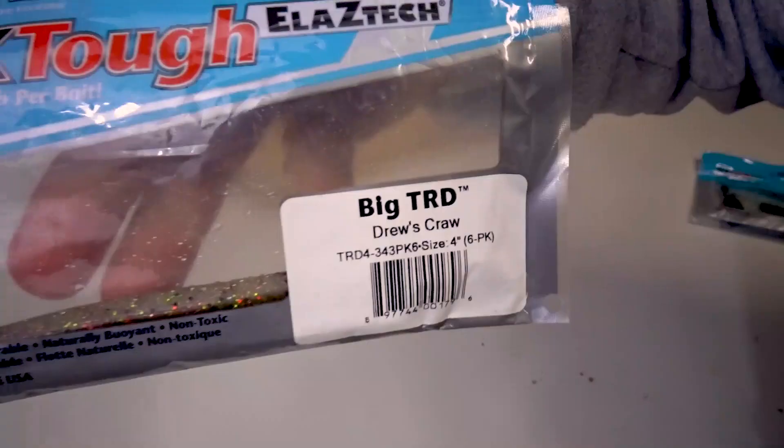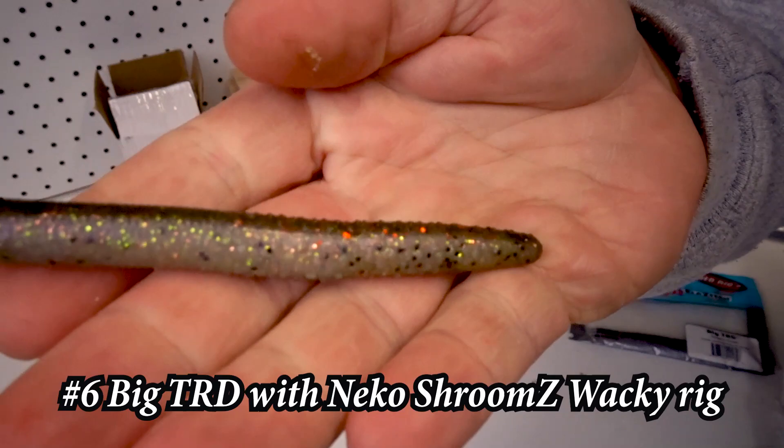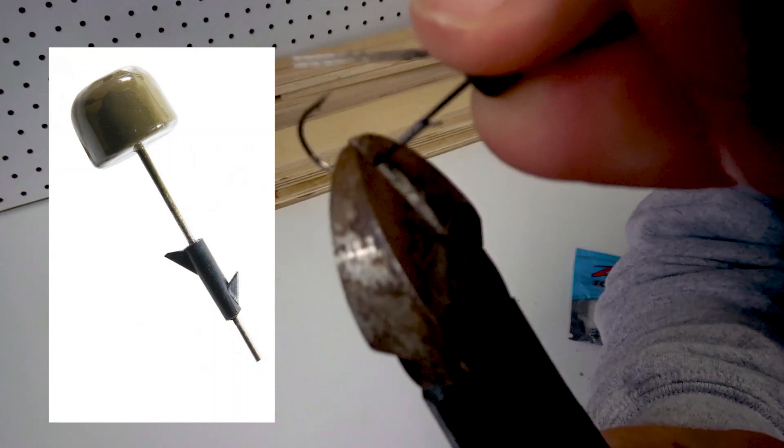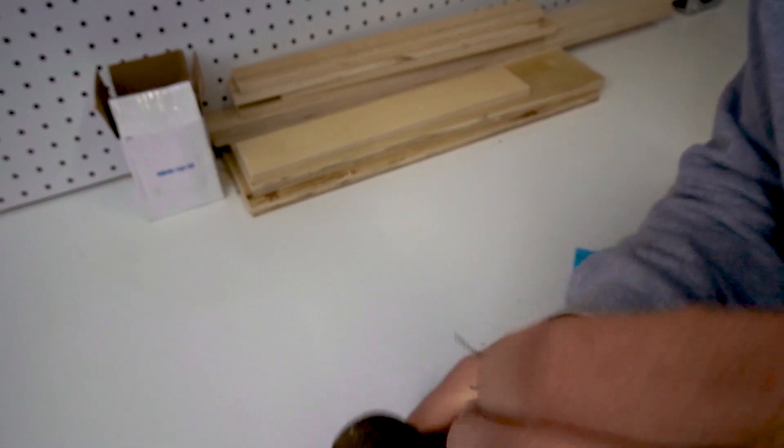Moving on to the last one, number six, big TRD with the Niko shroom Z wacky rig. With this one I did not have the Niko shroom Z, so I improvised. I used the shroom Z wheel jig head but I cut the hook off and also the weed guard. You only need the head for the weight.